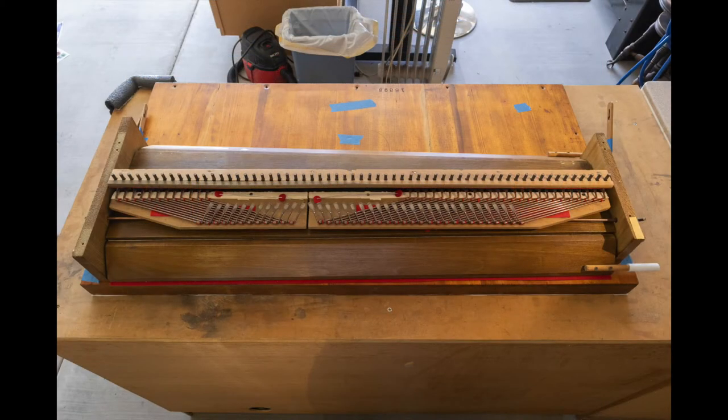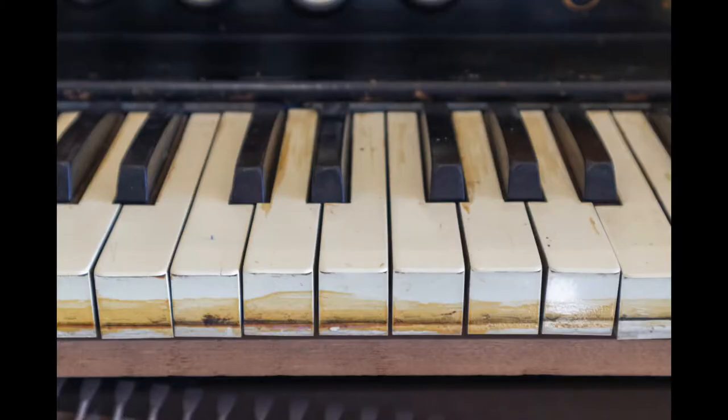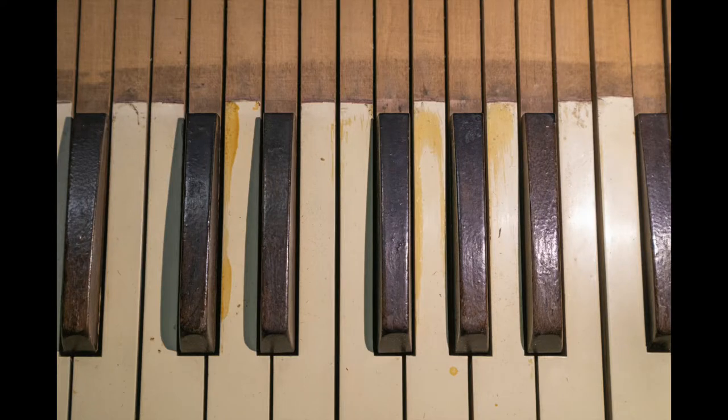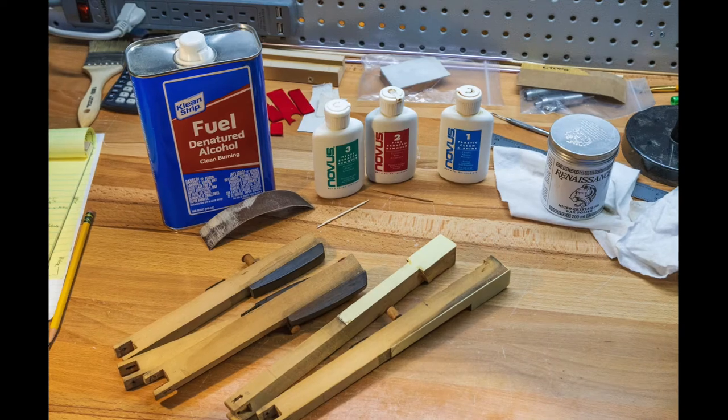In part two, we started working on the upper action. Today we're going to clean up those nasty keys. Someone had painted shellac on top of the black keys and slopped it all over. Here's the tools and supplies we're going to be using.